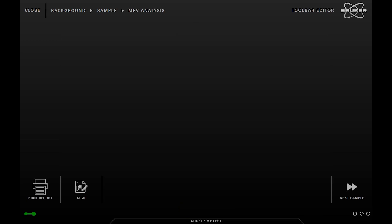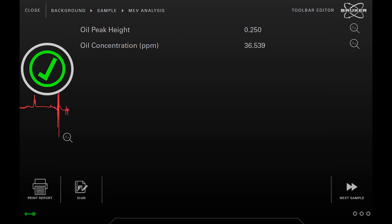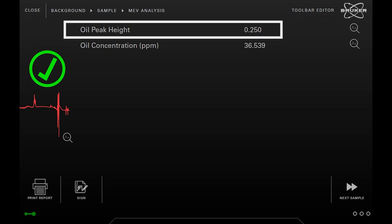After roughly a minute, the results are in. A green check mark indicates that oil is present in the sample. The result window also shows the oil concentration in ppm and the oil peak height. All information is presented very clearly, even for non-experts.